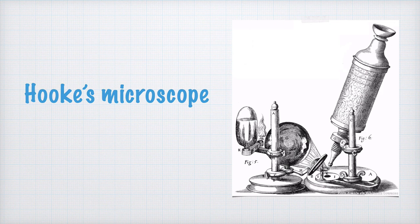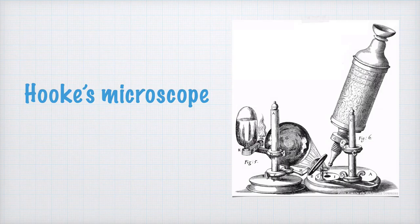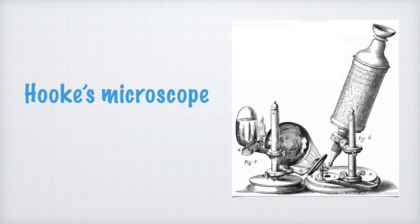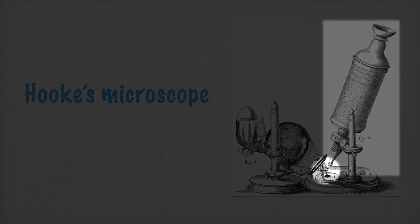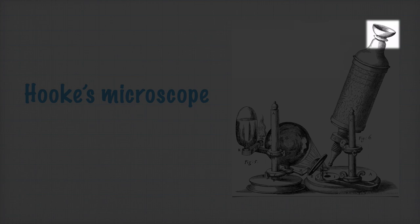Anyway, this is Hooke's drawing of his microscope. The light source is an oil lamp here, and the light was focused on the specimen by this water-filled glass sphere. The light reflected on the specimen and was enlarged through a series of lenses in this tube, and you looked at it through this eyepiece.